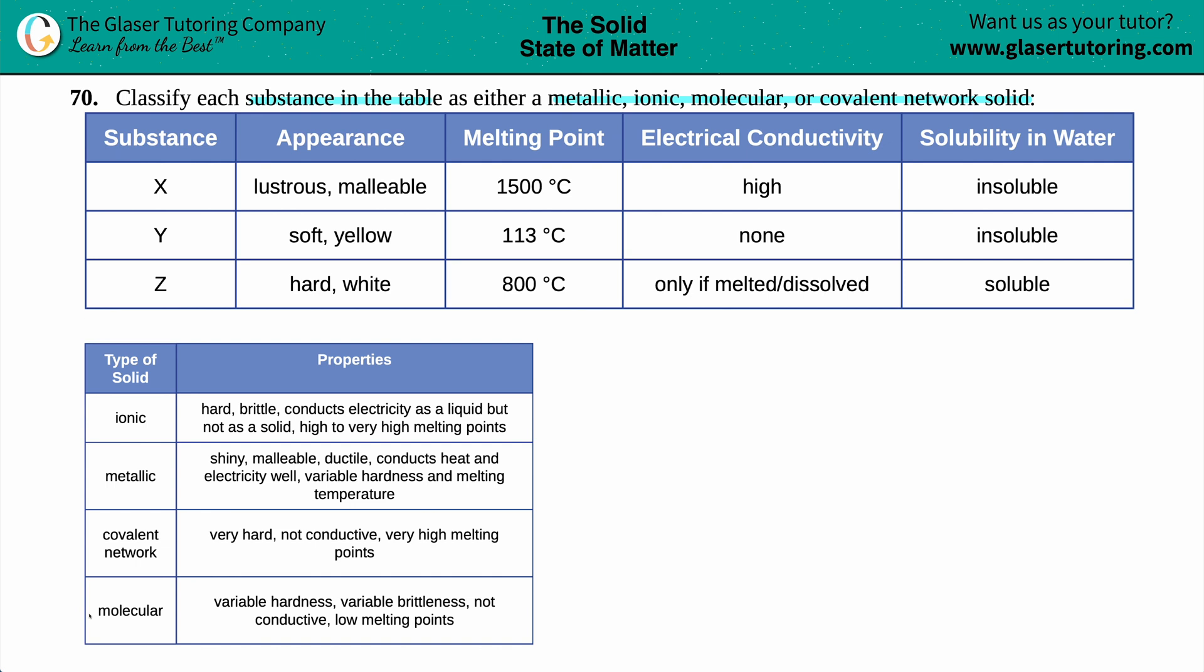Now we just have to put the pieces together to figure out which substance is which. So, let's go for Substance X first. Substance X, we read it across, has all of these components. It's lustrous and malleable.